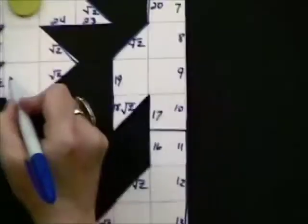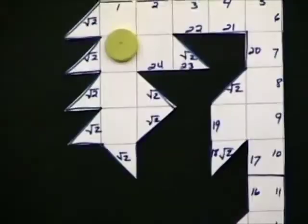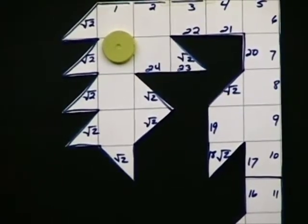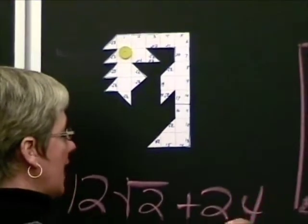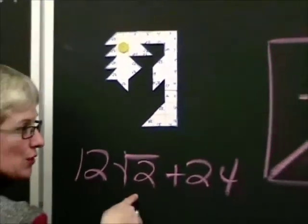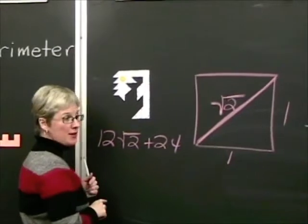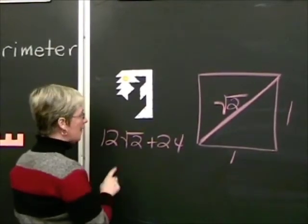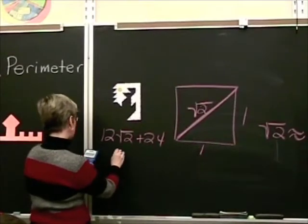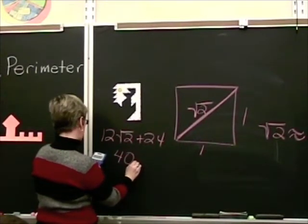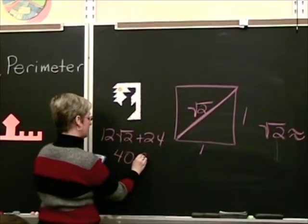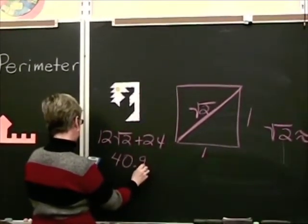I have a total of 24 straight 1s, and I'm going to add that to my 12 square roots of 2. And I'm going to do that then on my calculator, and that will be my total perimeter. My calculator is going to give me an answer of approximately 40.9 when rounded to the nearest tenth.